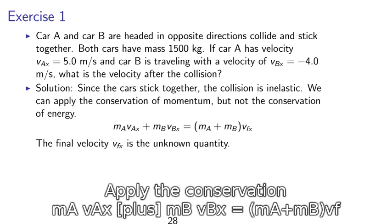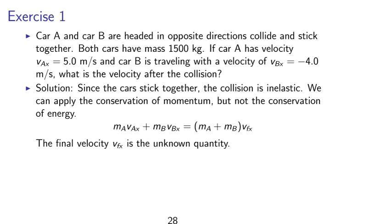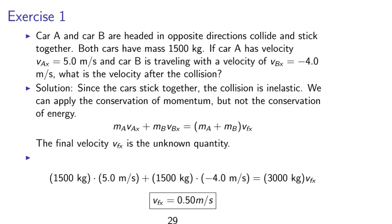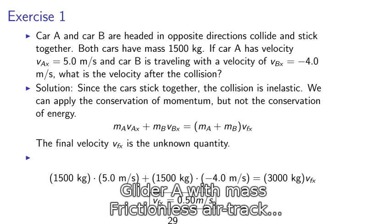Solution. Since the cars stick together, the collision is inelastic. We can apply the conservation of momentum, but not the conservation of kinetic energy. So we obtain MA Vax plus MB Vbx equals MA plus MB times Vfx, where Vfx is the final velocity of the two object combination. Final velocity is the unknown quantity. Solving, we obtain 1,500 kg times 5 m per second plus 1,500 kg times negative 4 m per second equals 3,000 kg times Vfx. We obtain Vfx equals 0.50 m per second.